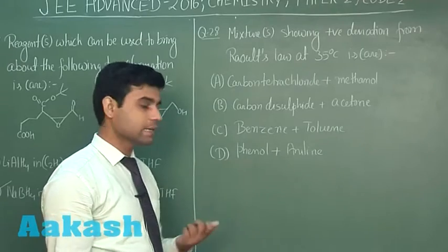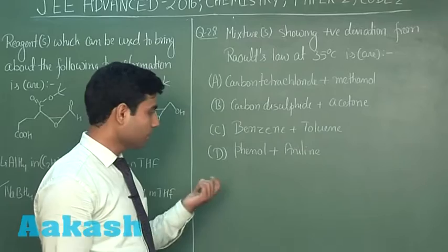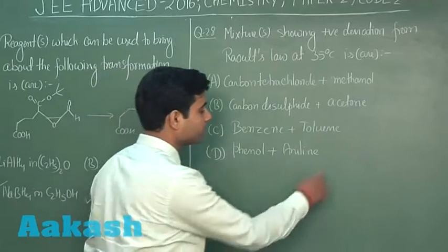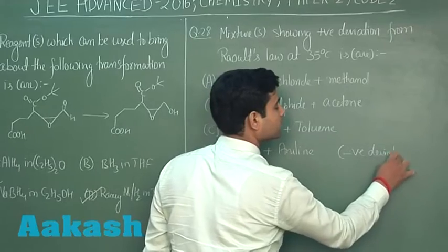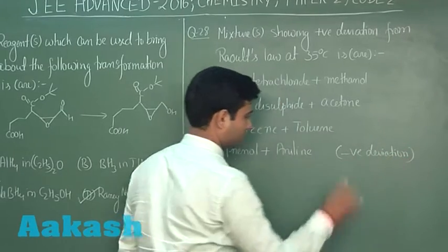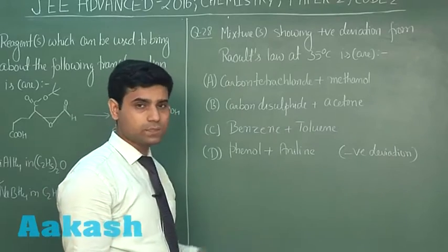As we know, phenol with aniline will form a stronger force of attraction. Therefore, this will show a negative deviation. Benzene with toluene will form an ideal solution.